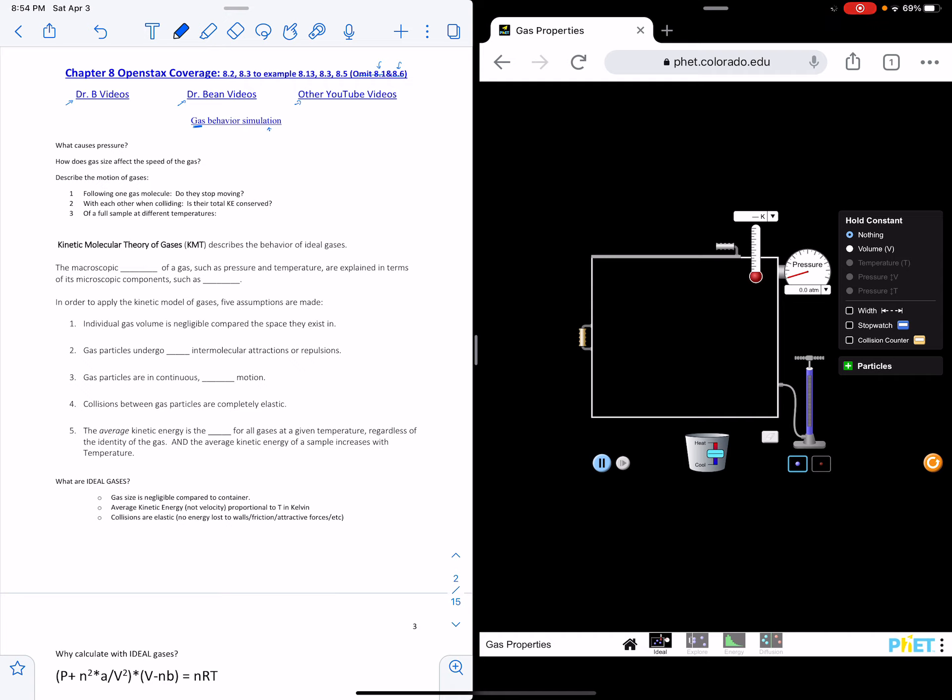Zero atmospheres and I'm going to put a pump of gas in there. The gas is just represented with little circles. We're going to try to answer these questions. One is what causes pressure, how does gas size affect the speed, and describe the motion. So the first one is going to be the pressure. Notice there's no pressure until now. Let me clear it so it knows the pressure is at zero. And now is when the pressure reads. I'll do it one more time.